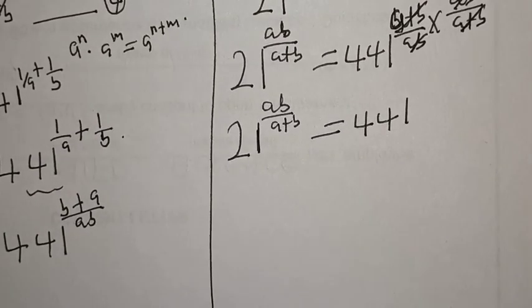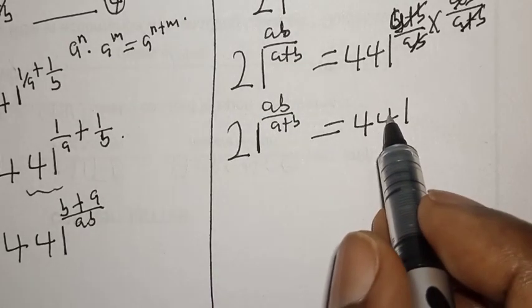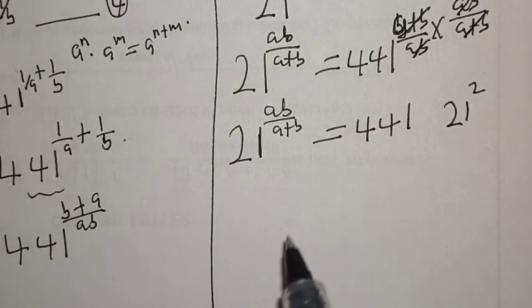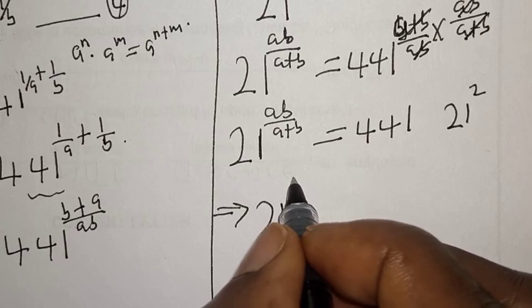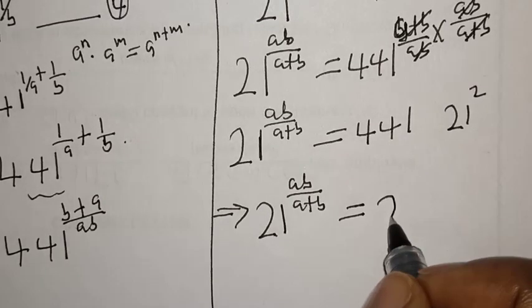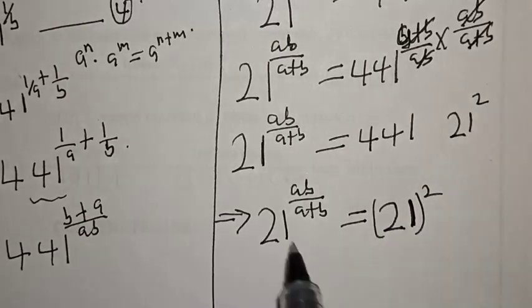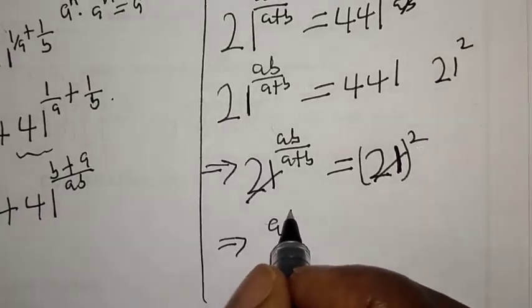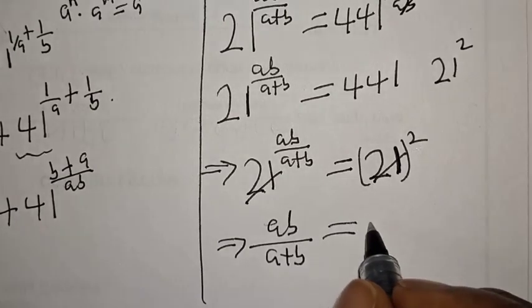Now, 441 can also be expressed as 21 squared, that is 21 times 21 equals 441. So our equation becomes 21 raised to power ab over a plus b equals 21 squared. Since they have the same base, the bases cancel, and this implies that ab over a plus b equals 2.